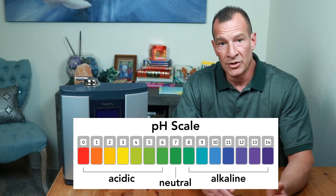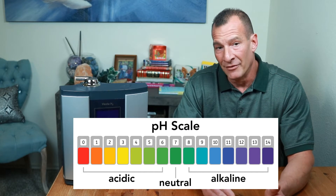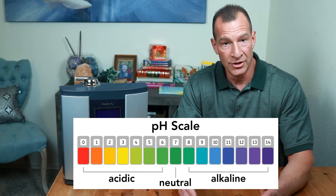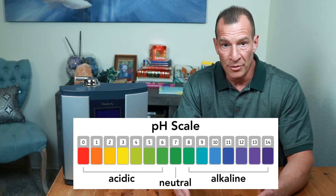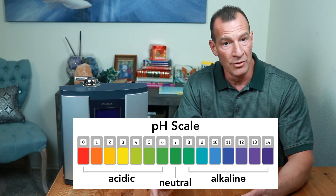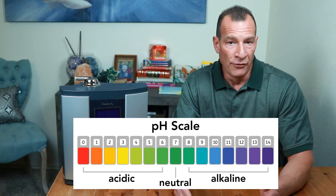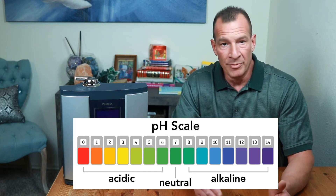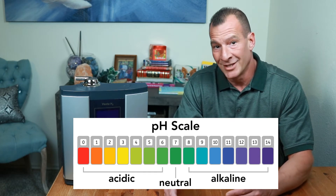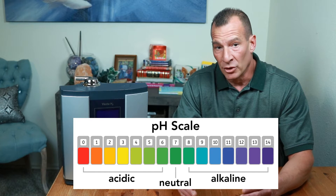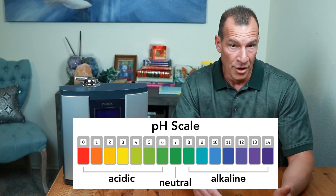Conversely, water that has a pH of less than 7 is considered acidic. The lower the number, the more acidic the water is. For example, water with a pH of 5 is more acidic than water with a pH of 6, because 5 is a lower number. The lower the number, the more acidic.